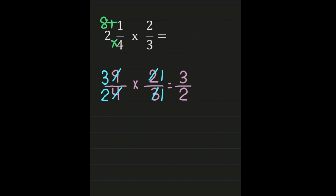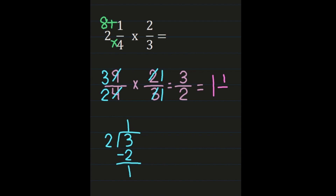If you can leave your answer as an improper fraction, you're finished. Otherwise, we convert 3 halves to a mixed number. If you already know it's 1 and a half, you don't need to show division steps. If not, put 3 on the inside and 2 on the outside: 3 divided by 2 is 1, with remainder 1. The quotient of 1 becomes the whole number and the remainder 1 becomes the numerator, giving a product of 1 and a half.